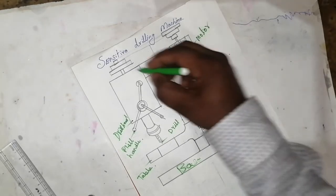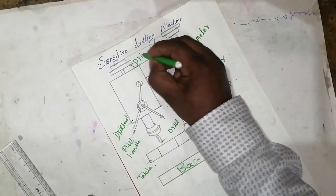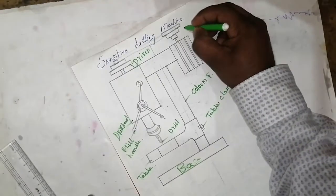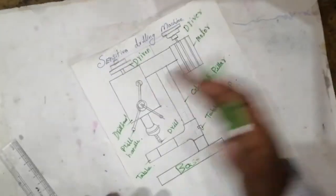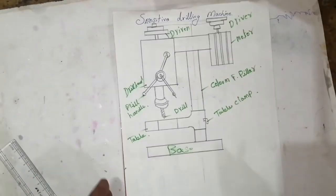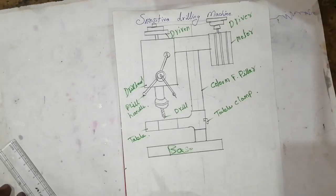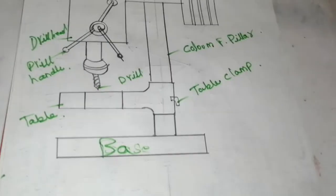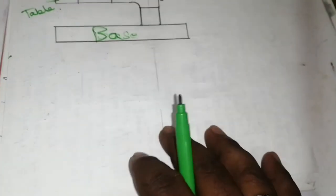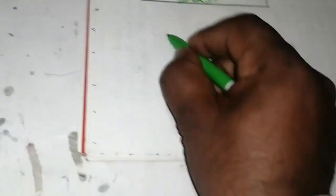This is driven, this is driver, driven, driver, motor, column, table piece. What all is there I have written like this. See, then how the motor belt works in the speed. I will show you like a demo like this.